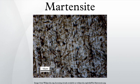Martensite is formed in carbon steels by the rapid cooling of austenite at such a high rate that carbon atoms do not have time to diffuse out of the crystal structure in large enough quantities to form cementite. As a result, the face-centered cubic austenite transforms to a highly strained body-centered cubic form of ferrite that is supersaturated with carbon. The shear deformations that result produce large numbers of dislocations, which is a primary strengthening mechanism of steels.